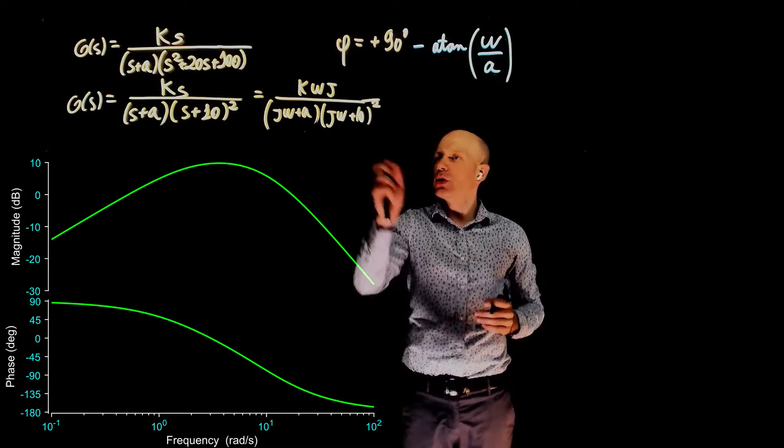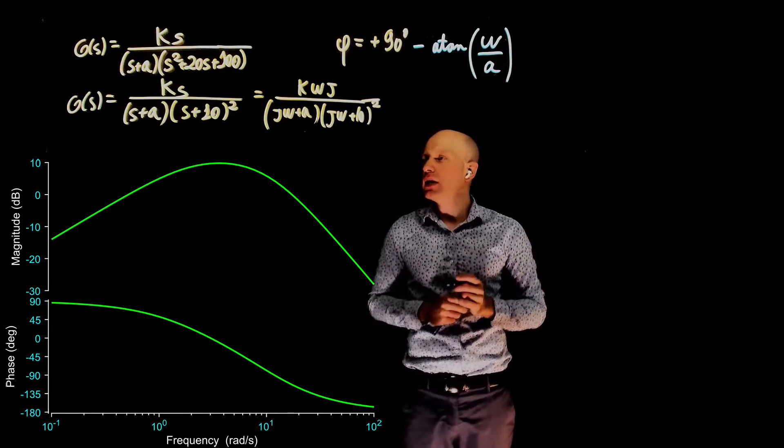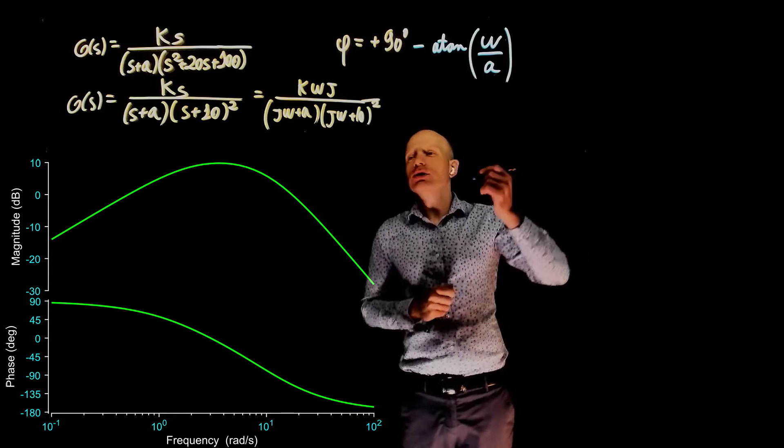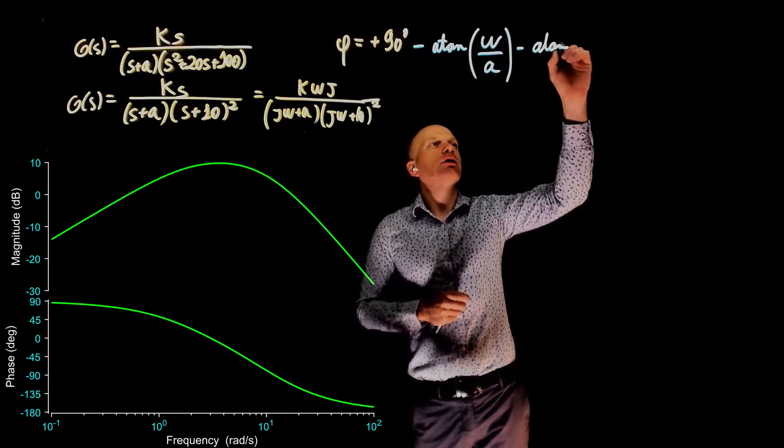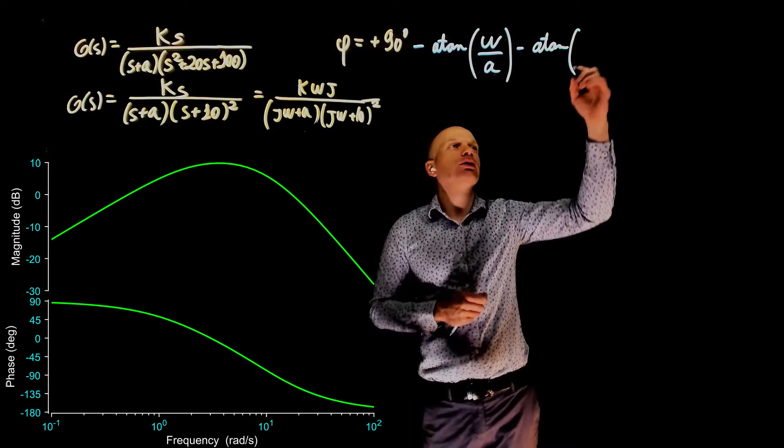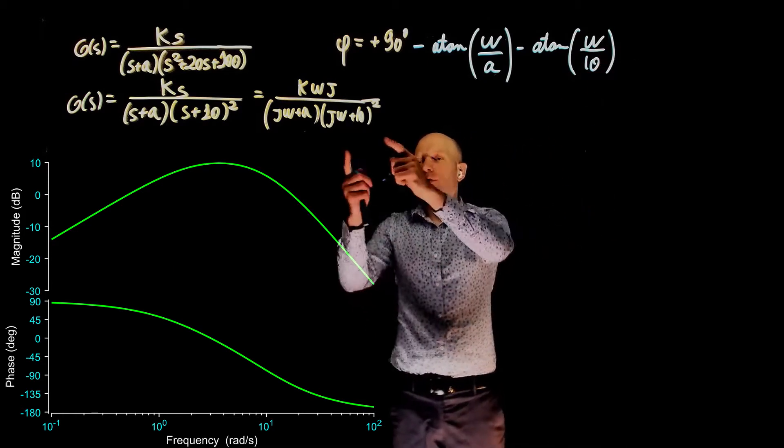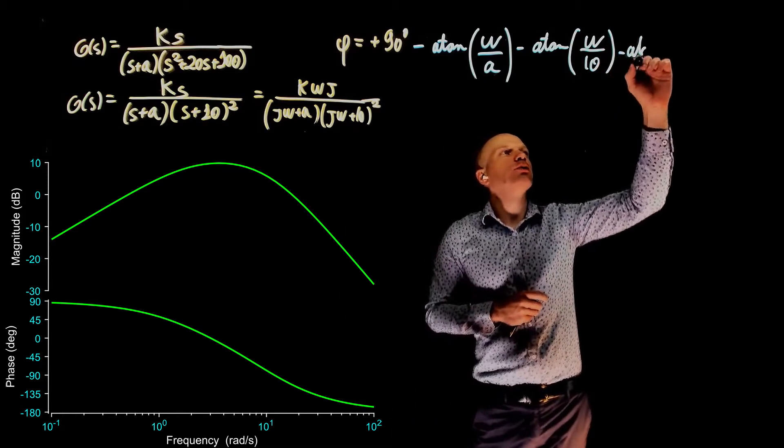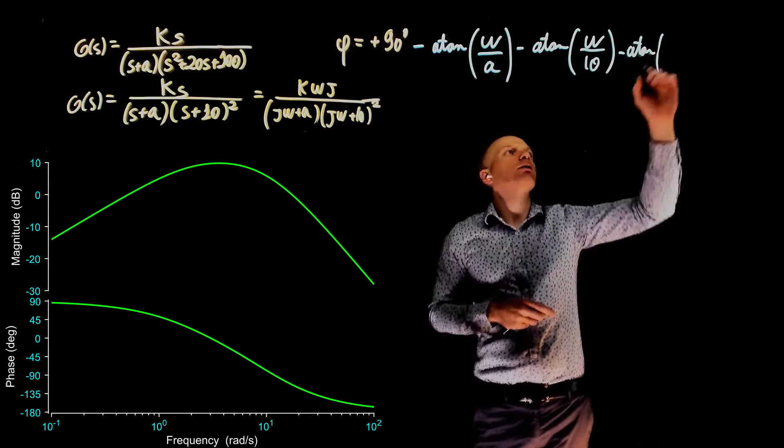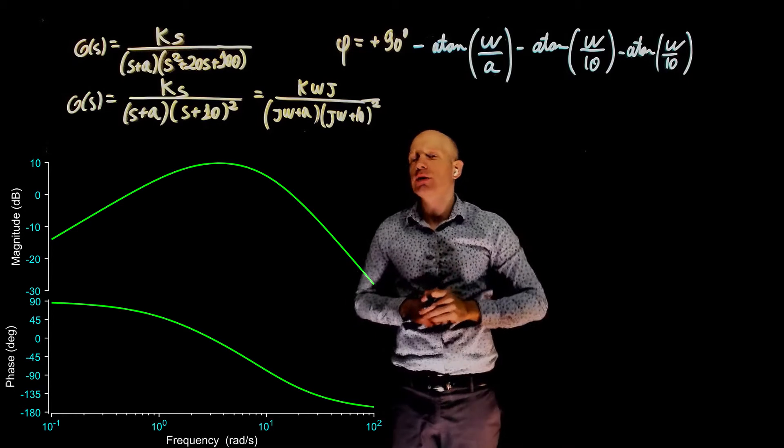Now let's move to these real poles here. We have two poles at s equals to negative 10. Each of them will add negative arc tangent of imaginary part divided by the real part, omega divided by 10. And this is for one of them. We have two because of the square, omega over 10.